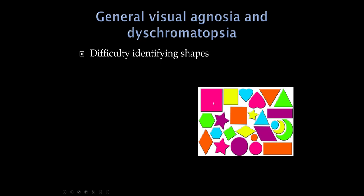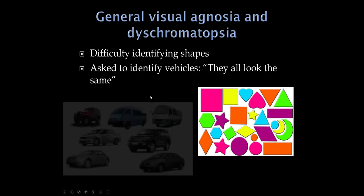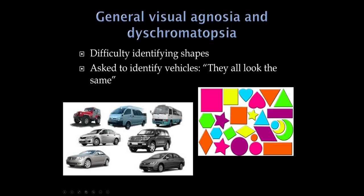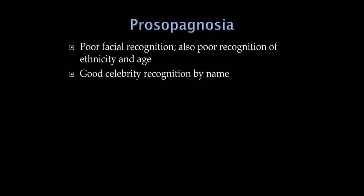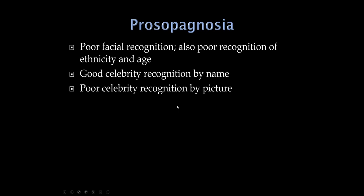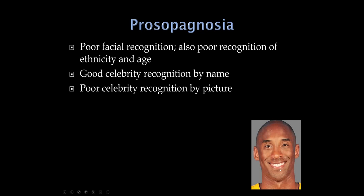Patients losing the 'what' of vision would struggle with colors and distinguishing between a heart, square, and triangle. I like to ask patients who know cars to look at pictures — they'll often say they all kind of look the same and can't tell the difference. Prosopagnosia is a specific type of visual agnosia where patients can't identify faces. They can be very good at recognizing tone of voice, but faces don't look familiar. We show them celebrity pictures and they're really poor at recognizing — they might know everything about Kobe Bryant, for example, but won't be able to recognize his picture.